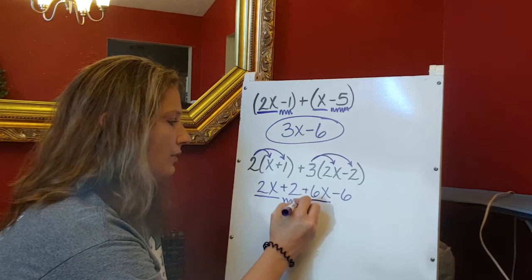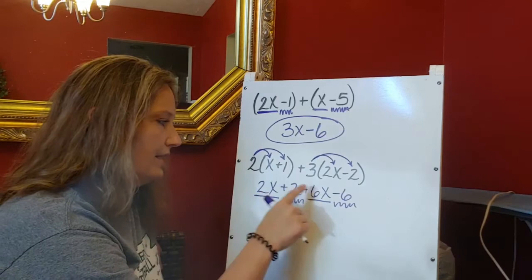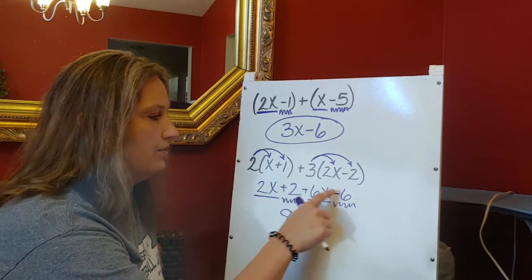So I'm going to combine those. 2x plus 6x gives me an 8x, and 2 minus 6 gives me a minus 4, and that's my final answer on that one.